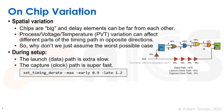We use the set_timing_derate command, which takes the launch or data path — which in a setup check is the late path — and multiplies each timing element's delay by a derate factor. For example, we add an extra 20% to slow it down further. For the capture path, which we call the early path, we speed it up by 10%, multiplying by 0.9. These derate values are provided by your foundry to indicate appropriate on-chip variation to apply.